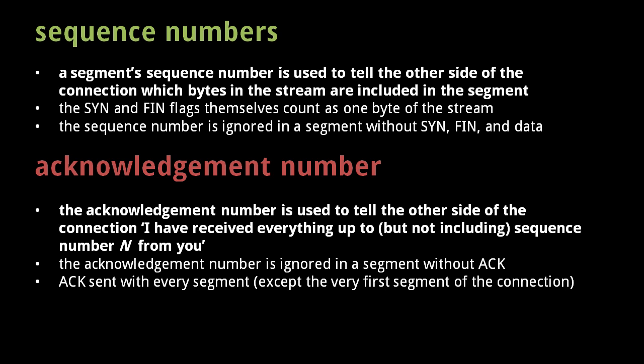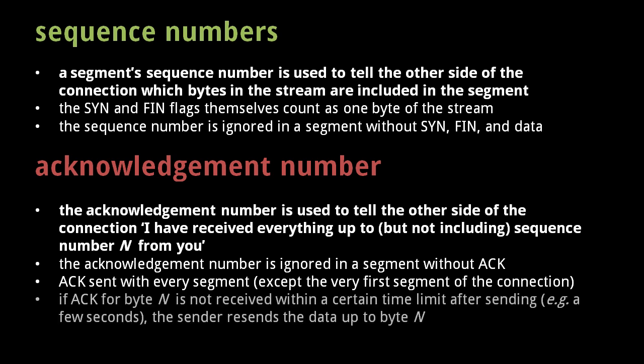In general, the acknowledge flag will be set in every segment except the very first one sent to establish a connection. When a sender does not receive an acknowledgement for bytes sent within a certain amount of time, it will automatically resend every byte past the last received acknowledgement number. The length of time a sender waits for acknowledgement is configurable and may fluctuate based on network congestion, with typical wait times ranging from a few seconds up to 30 or 60 seconds on the high end.